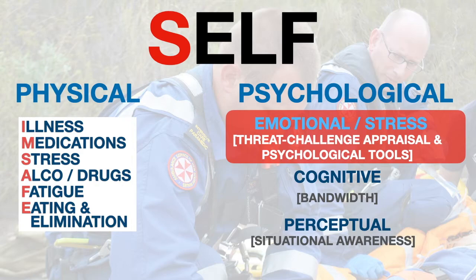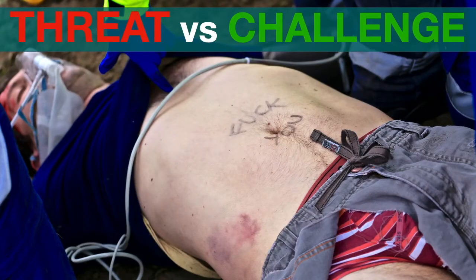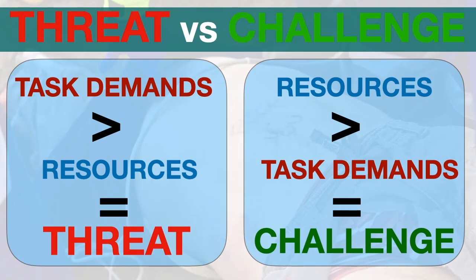When we are required to do a difficult task, our brains will perform a subconscious calculation — assessing what the demands are and whether we have the resources to deal with it. If demands outstrip resources it will be perceived as a threat, and we may feel anxiety, panic, or difficulty concentrating. If we feel our resources are sufficient, we perceive it as a challenge — bring it on. So if we feel ourselves becoming anxious, tachycardic, or overwhelmed, we need to employ psychological tools that will reappraise a threat as a challenge.